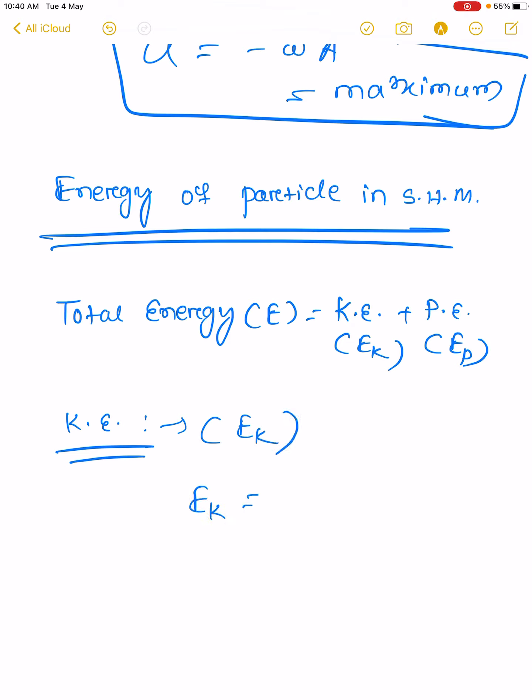Kinetic energy formula is half mv². The body has mass m and velocity v, where v equals minus A omega sin(omega t plus phi naught). Therefore, EK equals half m times A² omega² sin²(omega t plus phi naught).